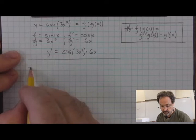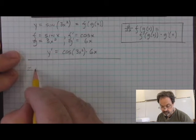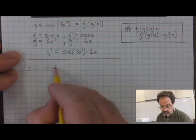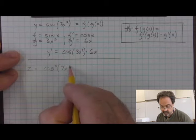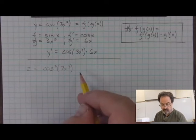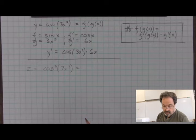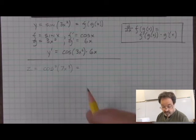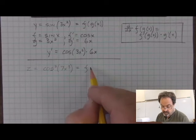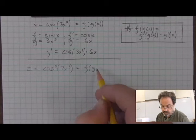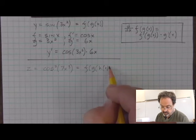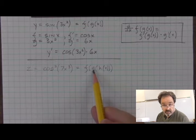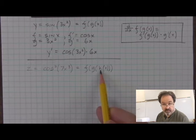I'm going to define the z function to be cosine squared of 7x cubed. The structure of this function is a composite function, but it's a composite of three functions. We have an outside function composed with something that is itself a composite function: f composed with g, which is composed of h of x.